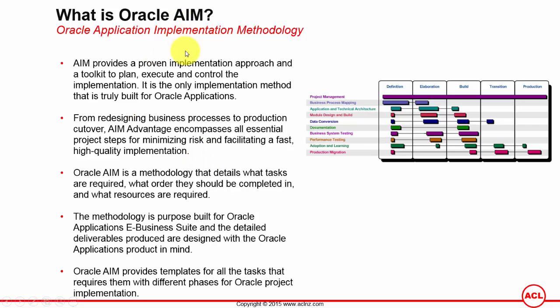AIM itself is of two types. One is called Oracle AIM Advantage and the second is called Oracle AIM for Business Flows. The way in which each method is used to implement Oracle E-Business Suite is slightly different. The method you choose can make or break an implementation, so it's extremely important to make a well-informed planning decision about which AIM method you are going to leverage for your E-Business Suite implementation.